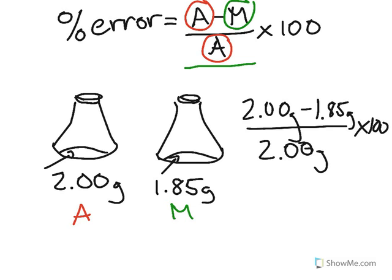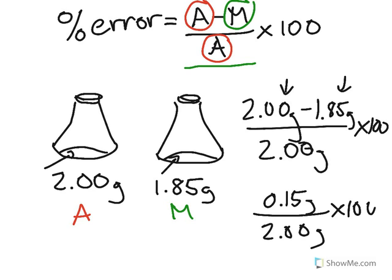All right. Now, when we subtract the numerator, we'll get 0.15 grams. Now, note that because we have to keep track of significant figures, this is good to the nearest hundredth of a gram. This is good to the nearest hundredth, so our answer should be to the nearest hundredth of a gram. We need to divide this by 2.00, multiply that by 100. So if we plug that into our calculators, divide by 2, and multiply it by 100, we get a value of a positive 7.5%.